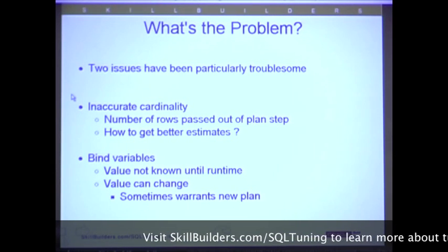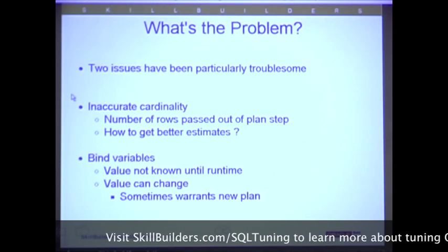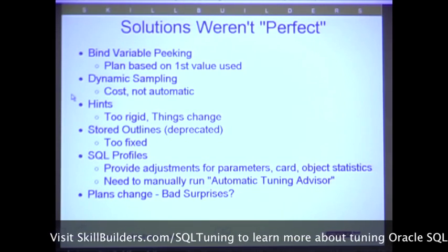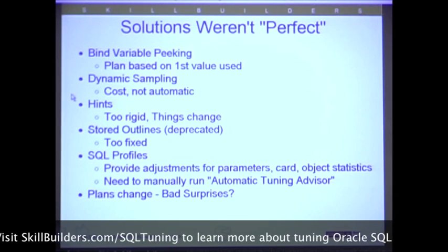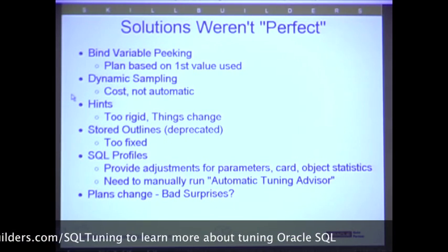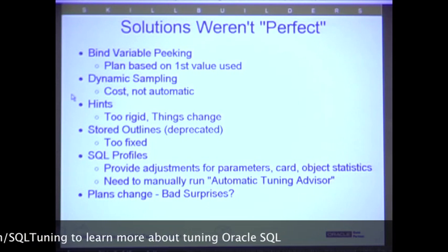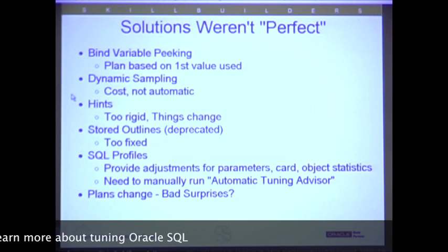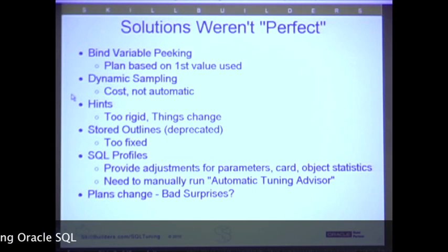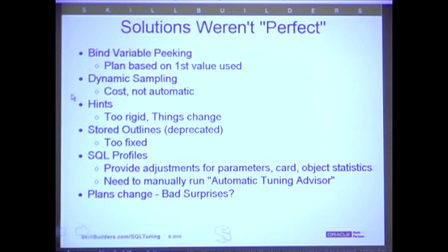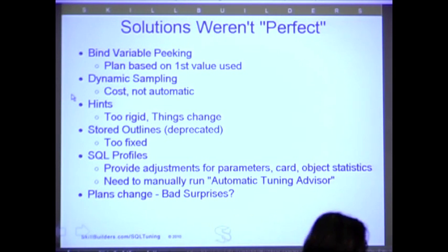So there's feedback-based optimization — hopefully a step closer to solving the problem. The prior solutions weren't perfect; they weren't even near perfect. With bind variable peeking, when it hard-parsed the query, it peeked at the value and optimized the plan based on the value at hard-parse time. That's pretty good if the values were all the same, but bind variable values are never all the same — that's the point. So when the bind variable value changed, very often there was a need for re-optimization, for a new plan. We didn't have that ability before. Now we do.